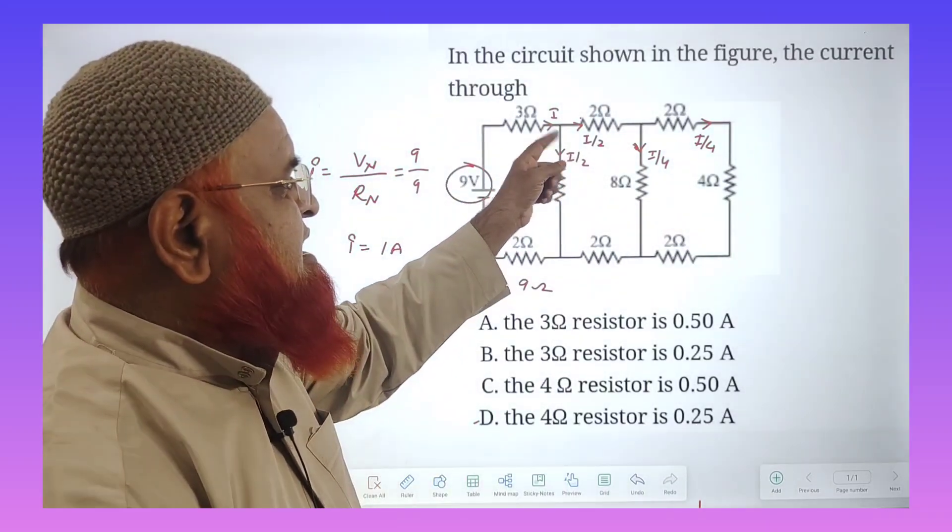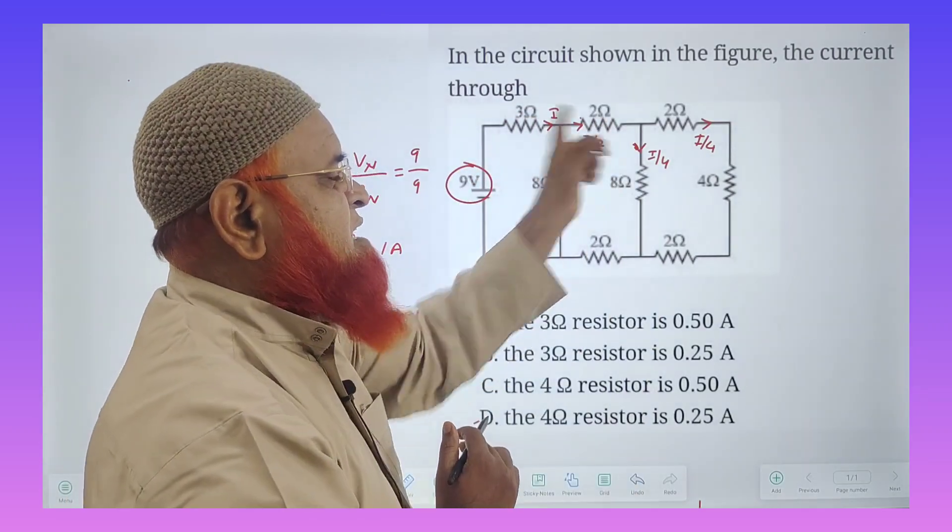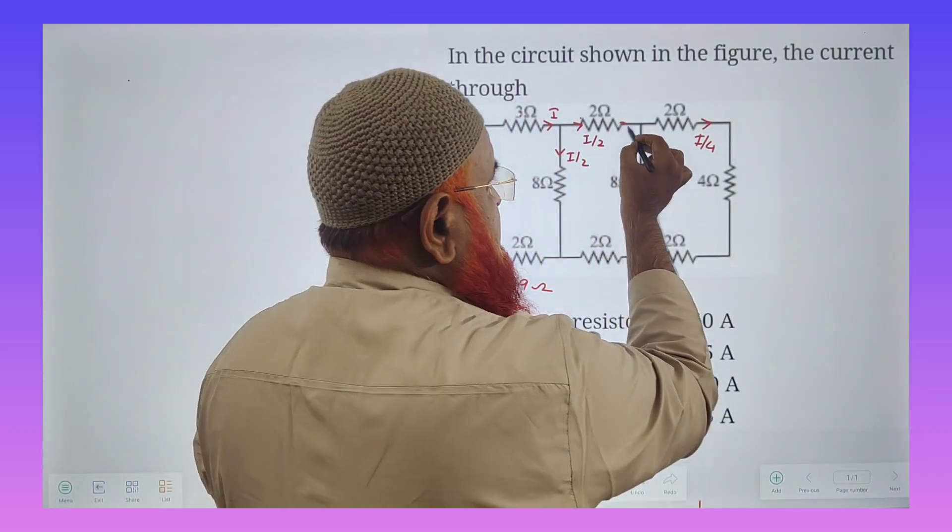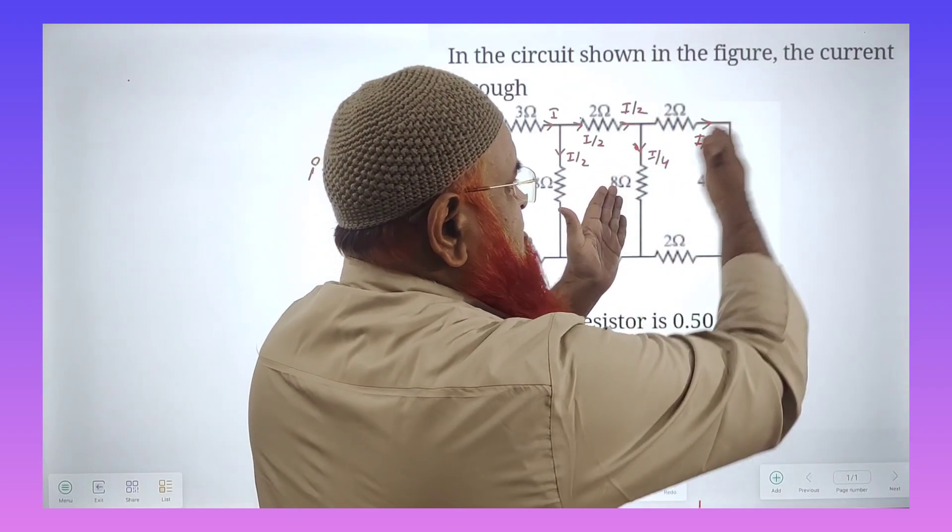So here up to here current is I. This current gets divided into I by 2 and I by 2. Up to here it is I by 2. Again it is divided by I by 4 and I by 4.